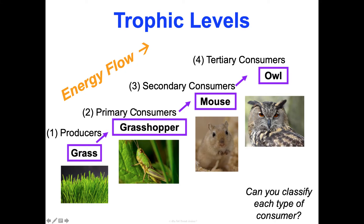Can we classify each type of consumer? This grasshopper eating grass makes it an herbivore. This mouse eating grasshopper is a carnivore in this food chain — it may eat something else in another. Think about you as a human: when you eat a salad, you're a primary consumer eating a producer. When you eat a cow, you're a secondary consumer — grass, cow, human — you're eating a primary consumer who's eating a producer.